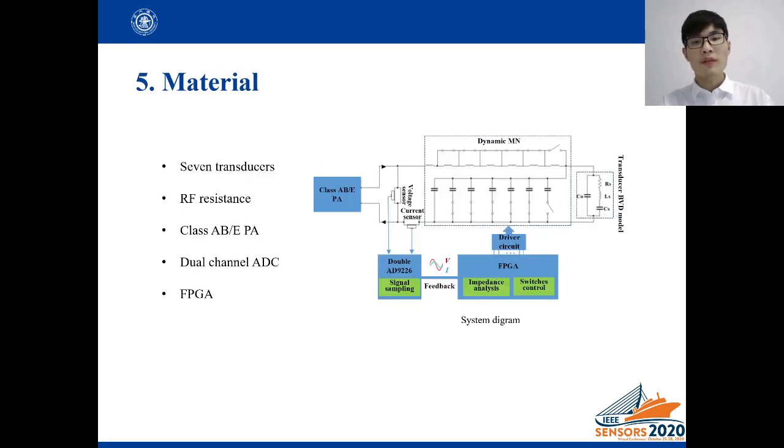The whole process of dynamic matching includes the acquisition of voltage and current signal, impedance calculation, and switching control of dynamic impedance matching network.